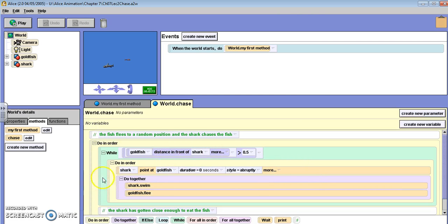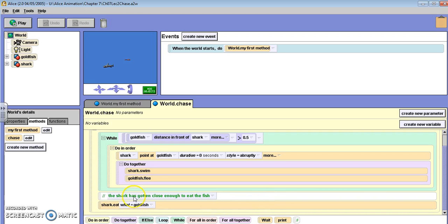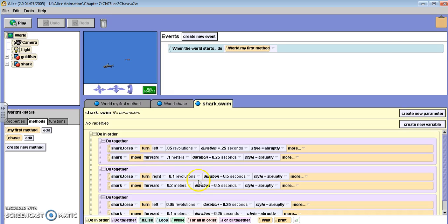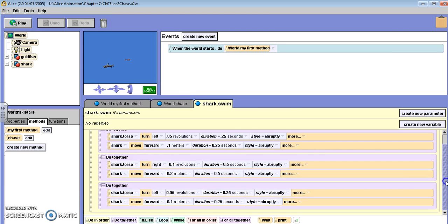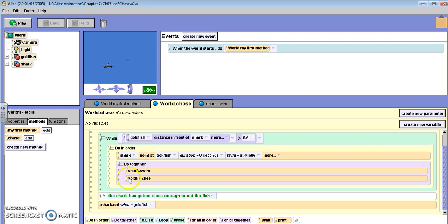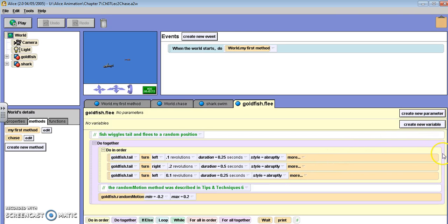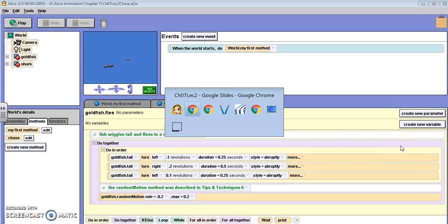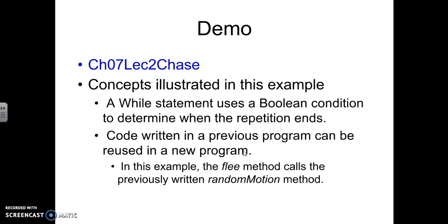So there is the finished code. Here is what it looks like. So while, there's our condition. If the while is true, do this. If the while is false, then the shark eats the goldfish. So pretty simple. Now here is the shark swim. Here is the shark swim method. And then here is the goldfish flee method. So we will be creating this in an in-class example. You'll get the opportunity to see this as we write it ourselves.